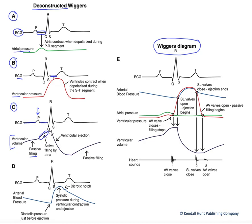Then the atria repolarize, and the ventricles are depolarizing, but we're not really moving any blood at that moment, so we're isovolumic — meaning the same volume in the ventricles — and our line is therefore flat. Once the ventricles generate enough pressure to open the semilunar valves, we'll no longer be isovolumic and we begin to eject blood into the pulmonary and systemic circuits through that open semilunar valve.